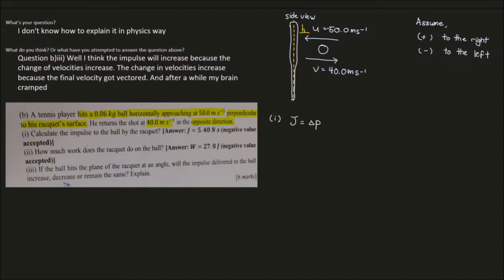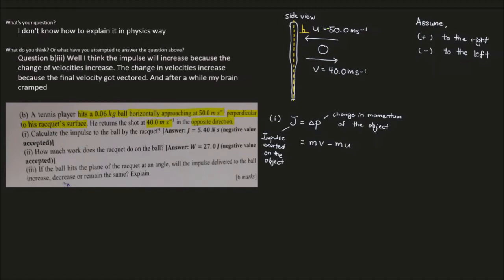The impulse-momentum theorem tells us that the final momentum minus the initial momentum equals the impulse experienced by the object — this is the change in momentum of the object. Here J represents the impulse exerted on the object; the object experiences this impulse. We know the mass of the ball is 0.06 kg.